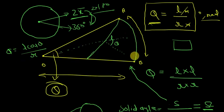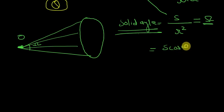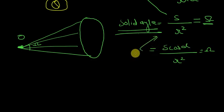Similarly, if the surface is not oriented normal to point O, the solid angle definition becomes: omega = S·cos(alpha) / R², where alpha is the angle between the surface and the normal. If the surface is oriented normal, alpha becomes zero and we get the simpler definition omega = S / R².